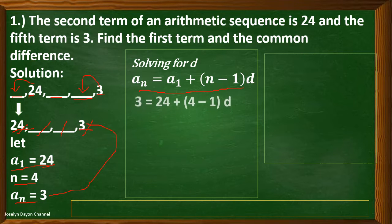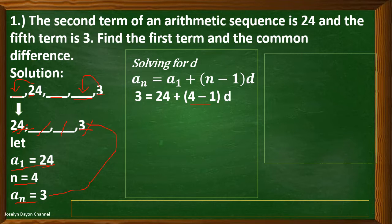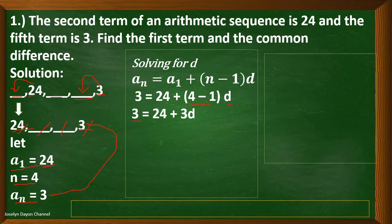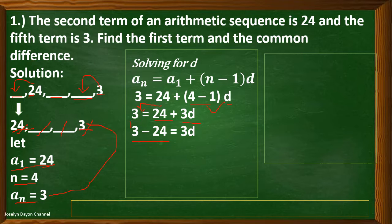Now let's substitute. a sub n is 3, our first term is 24, and n is equal to 4 minus 1 times d. Simplifying: 3 equals 24 plus 3 times d, which gives us 3d. Transpose 24 to the left side to get negative 24. So 3 minus 24 equals 3d, and 3 minus 24 is negative 21. We have negative 21 equals 3d.